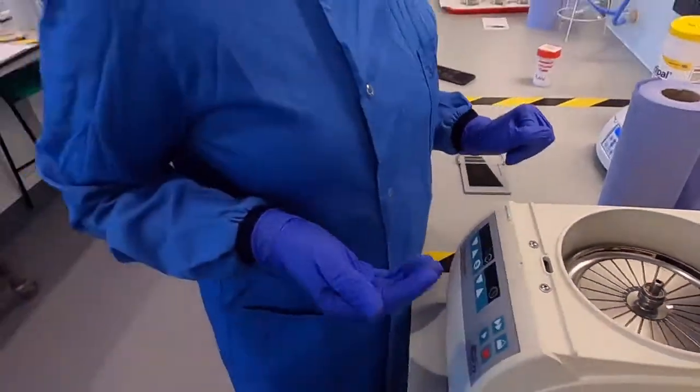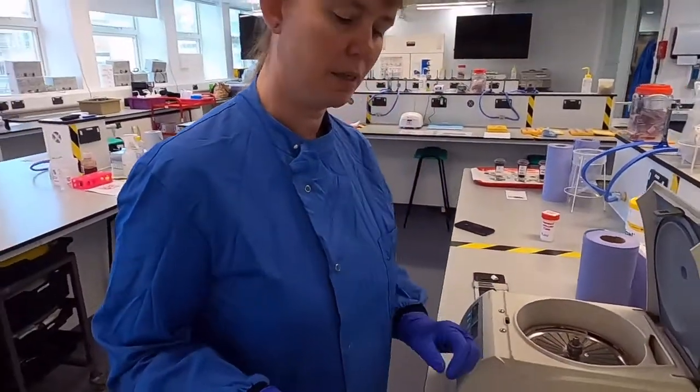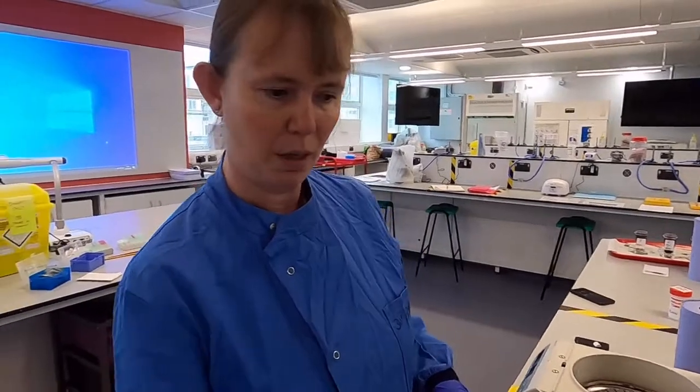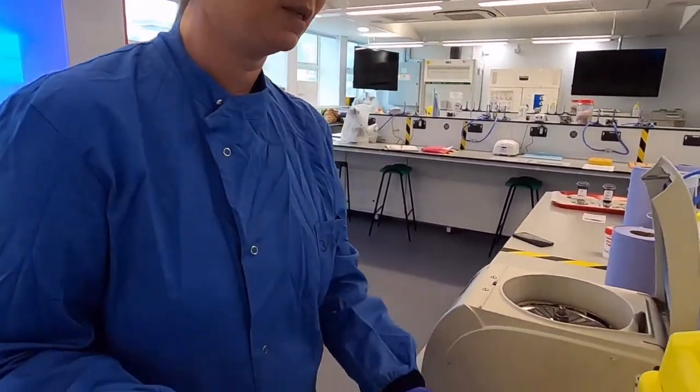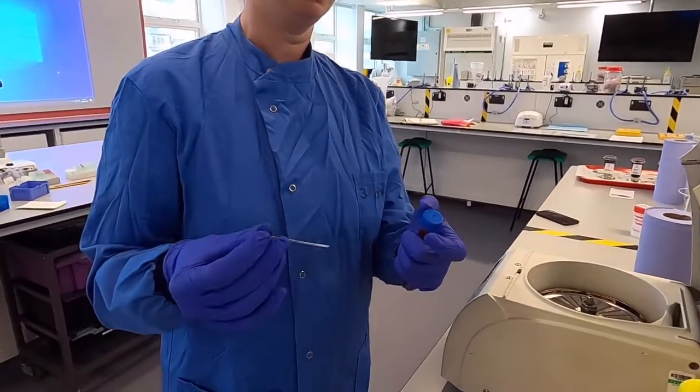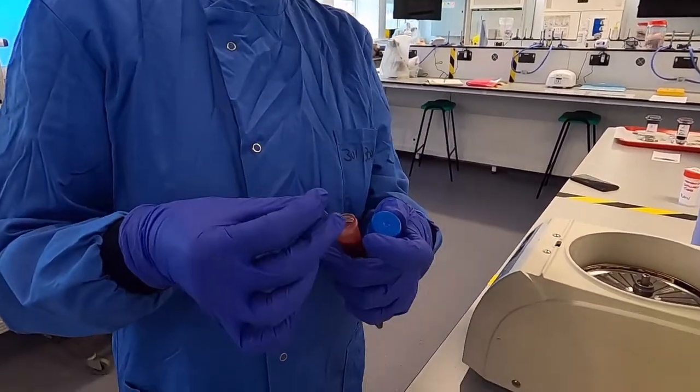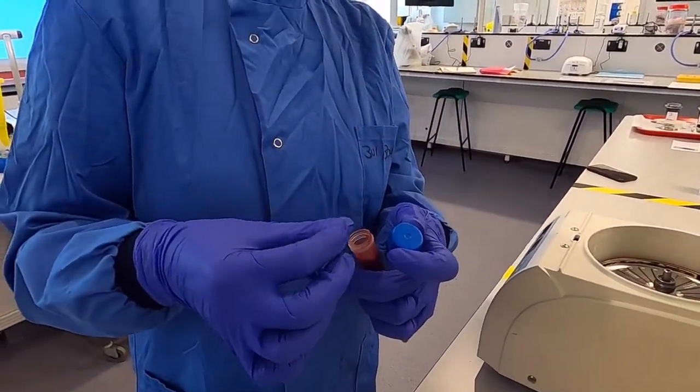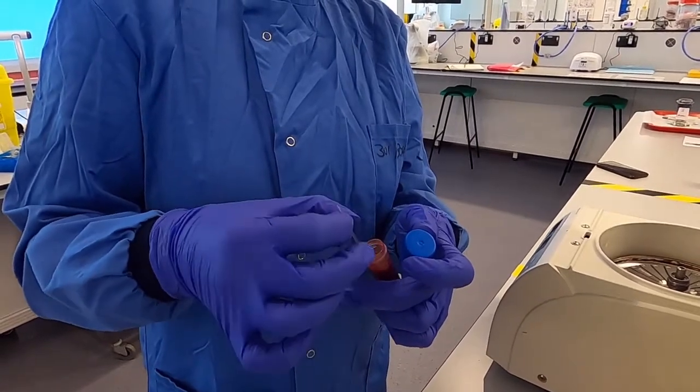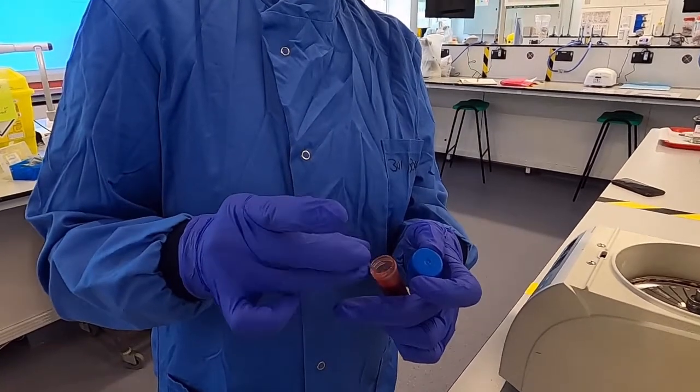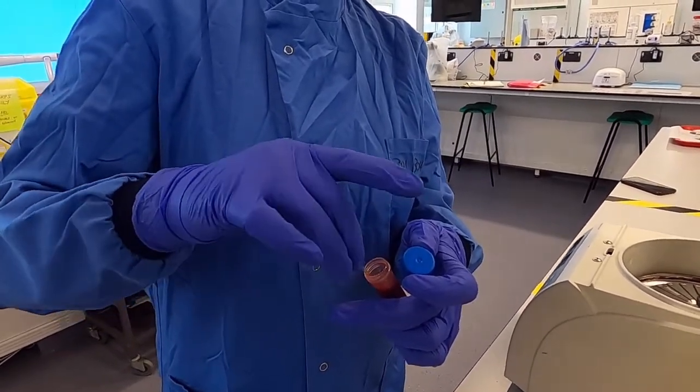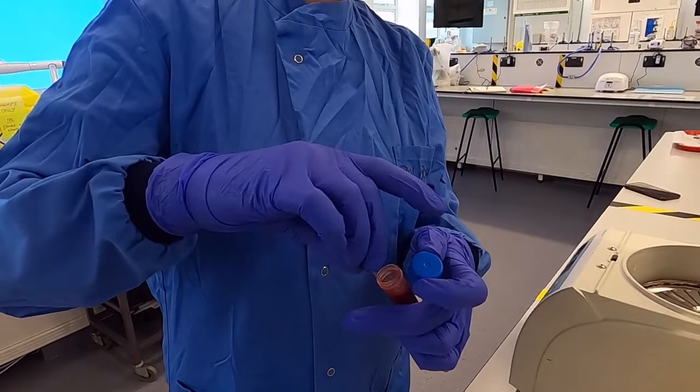We need to make sure that the centrifuge is balanced so we're going to take another capillary tube and repeat the same process. So we'll refill this capillary tube and roll it to try and get the blood to come up.